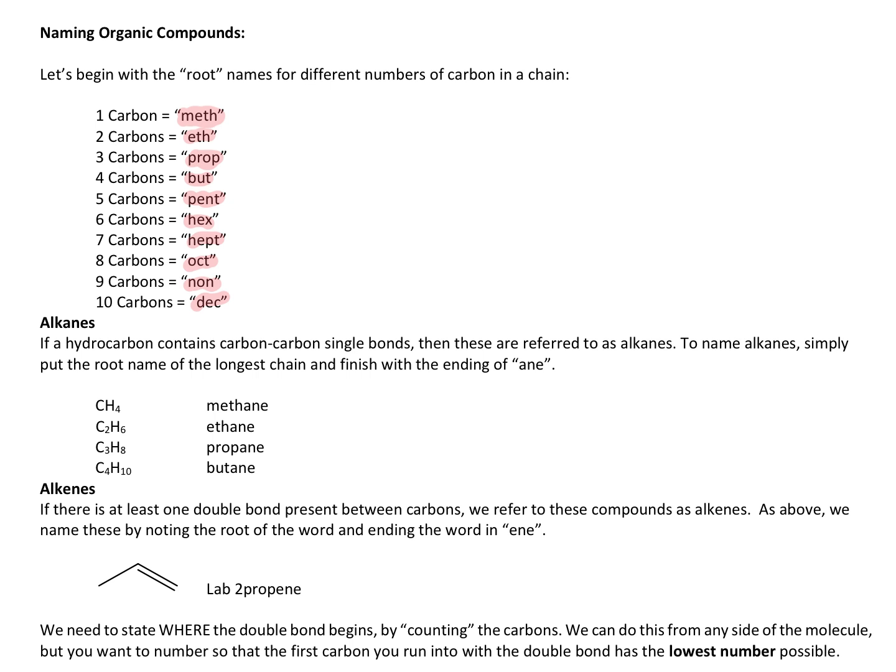Now we can start putting that together. If we have something like methane or ethane, then methane is one carbon, hence why it says meth. That would be CH4. By the time we get to propane, which you may be familiar with in your gas grills, that is going to be three carbons chained together. Since everything has a single bond, we end the word in -ane. That's how you would name alkanes.